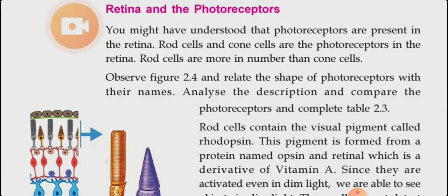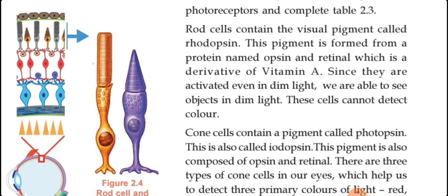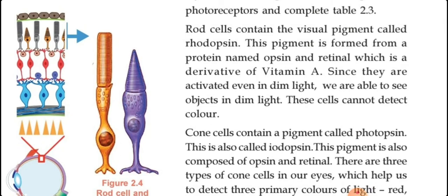These photoreceptors — rod cells and cone cells — each contain a special type of visual pigment. Visual pigment means some chemical present in each photoreceptor. Because these pigments are there, the rod cells and cone cells are able to provide the sense of vision. If there is no pigment, they cannot provide the sense of vision. So next we have to study which are the visual pigments present in each photoreceptor.